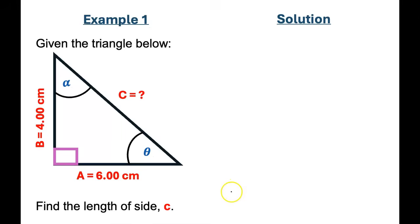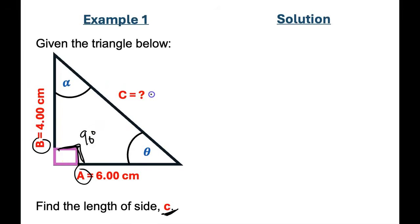Now let's dive into an example. Given the triangle below, find the length of side C. We can see that we have a triangle. Is it a right triangle? Yes, because two of its sides — side A and side B — are perpendicular, forming a 90-degree angle. This 90-degree angle is facing side C, which is the hypotenuse. Identifying this allows us to use the Pythagorean theorem to find the length of the unknown side C.